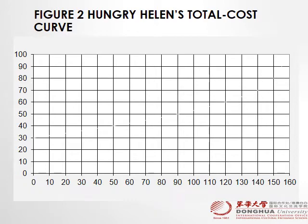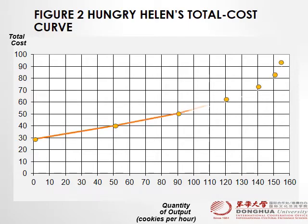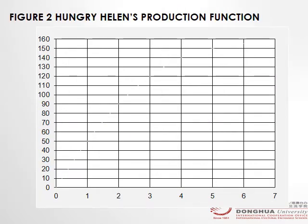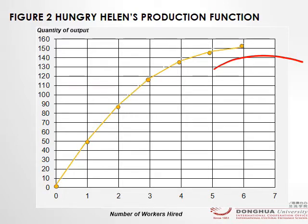This is the opposite side of the same coin. When you look at the total cost curve it goes steeper, while the production function goes flatter. So when you flip it up it would be flatter — the production function and total cost are the opposite sides of the same coin.